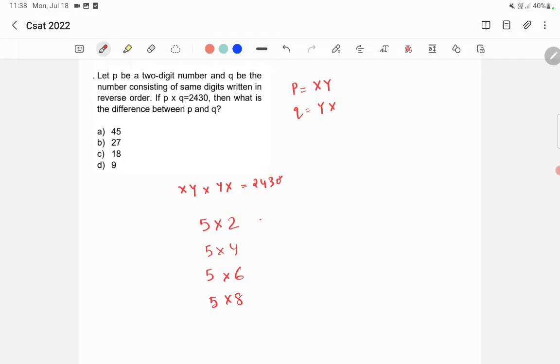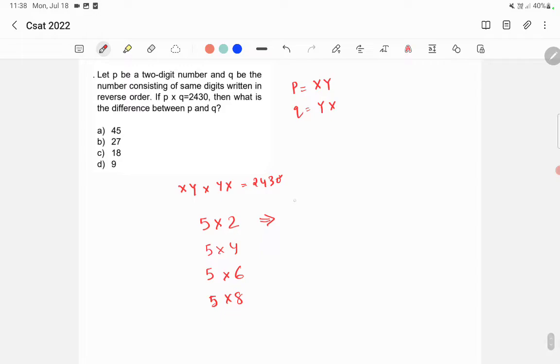So if it's 5 into 2, the possibilities for xy and yx are 25 and 52. Here it is 54 into 45. Here it is 56 into 65 and here it is 58 into 85.